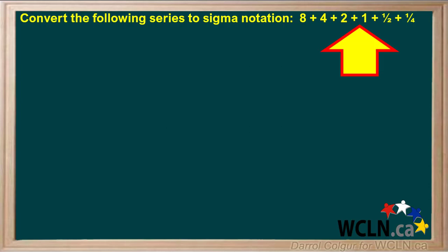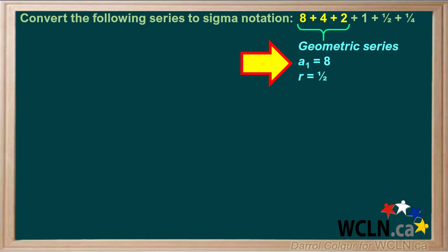We're asked to convert the given series to sigma notation. Looking at the first three terms, we can tell this is a geometric series. a1 equals 8 and r equals 1 half.